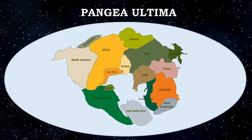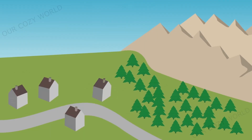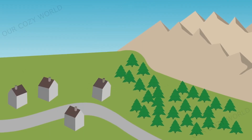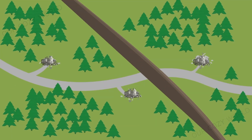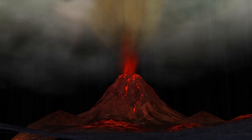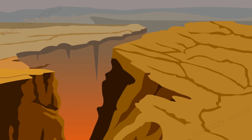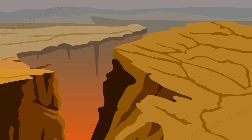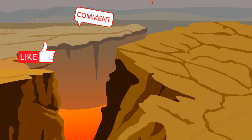The theory of plate tectonics is one of the most important theories in the history of Earth science, because it provides insights into the causes of earthquakes, volcanoes, and the ever-changing surface of our planet. Now you know about this theory. Thanks for watching — see you next time.